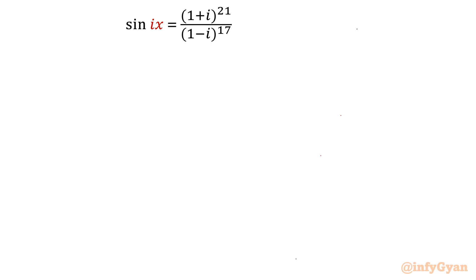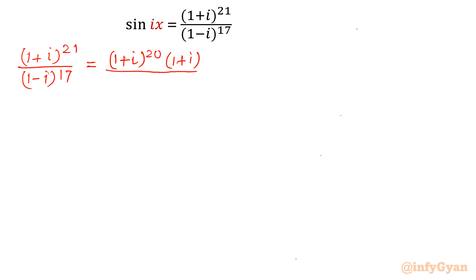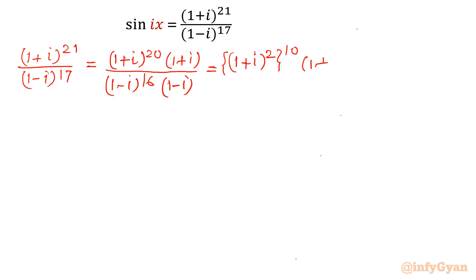Let us get started by writing the RHS first. So RHS is (1+i)^21 divided by (1-i)^17. I can split the numerator and denominator exponents as (1+i)^20 times (1+i), divided by (1-i)^16 times (1-i). Now I can write (1+i)^20 as [(1+i)^2]^10 times (1+i). Similarly in the denominator, we can split as (1-i)^8 times (1-i).